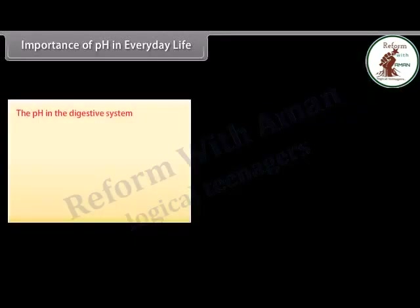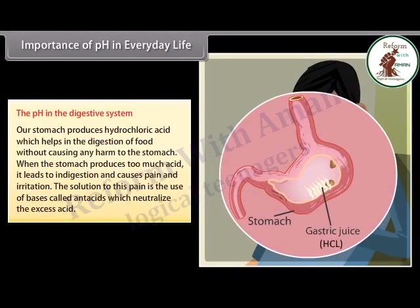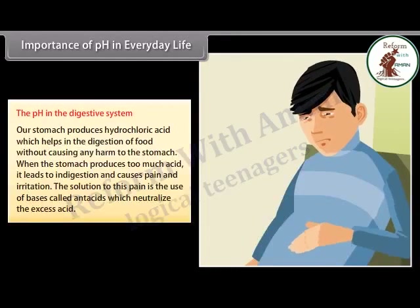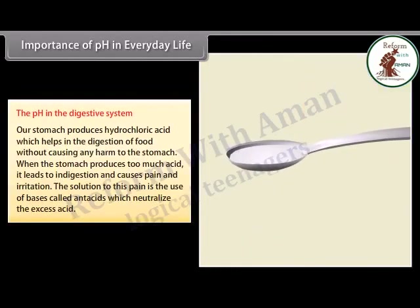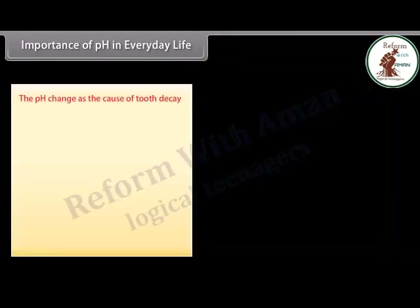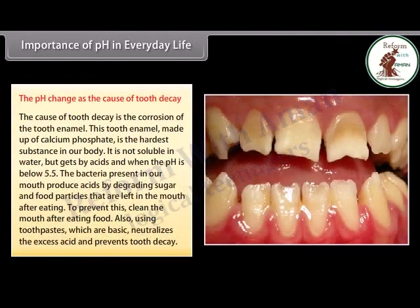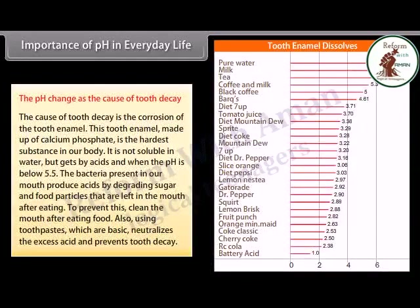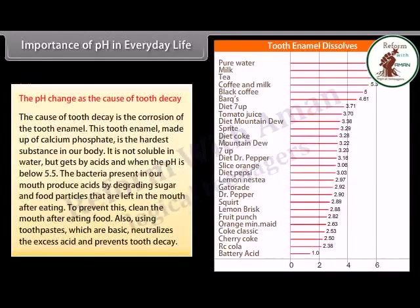The pH in the digestive system: our stomach produces hydrochloric acid which helps in the digestion of food. When the stomach produces too much acid, it leads to indigestion and causes pain and irritation. The solution is the use of bases called antacids, which neutralize the excess acid. The cause of tooth decay is the corrosion of the tooth enamel. This enamel, made up of calcium phosphate, is the hardest substance in our body — it is not soluble in water but gets corroded by acid when the pH is below 5.5. Bacteria in our mouth produce acids by degrading sugar and food particles. To prevent this, clean the mouth after eating and use toothpaste, which is basic, to neutralize the excess acid and prevent tooth decay.